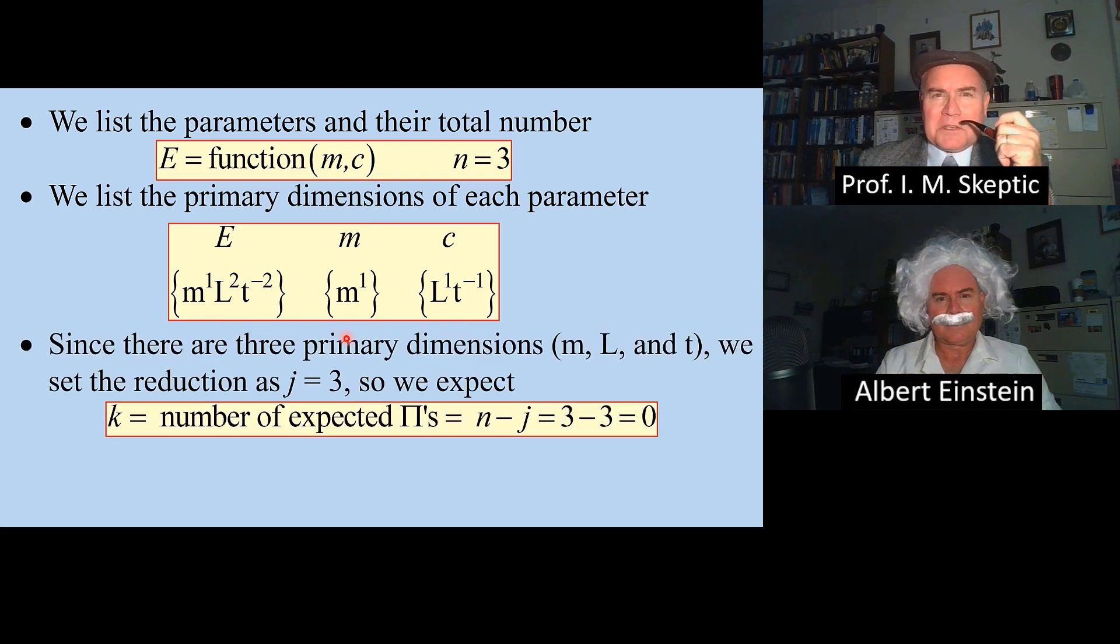Since there are three primary dimensions, M, L and T, we set the reduction as j equals 3. So we expect k, the number of pi's, is n minus j, or 3 minus 3, which is zero.